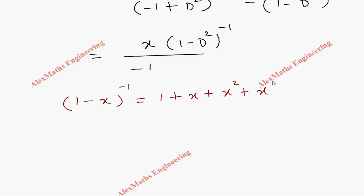x/(-1) is -x. Open the bracket: 1 + x, instead of x we have D², then plus x² which is D^4, plus dot dot dot.